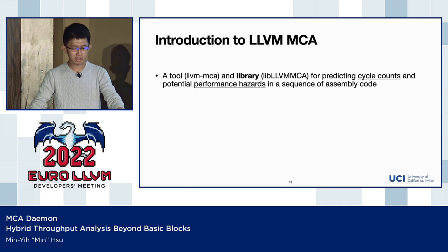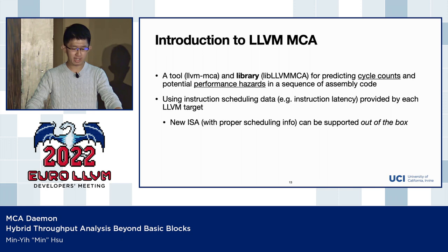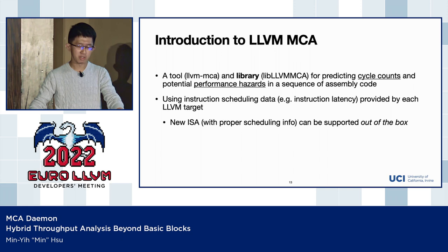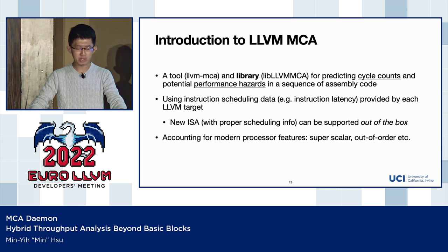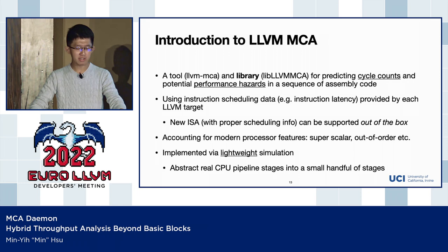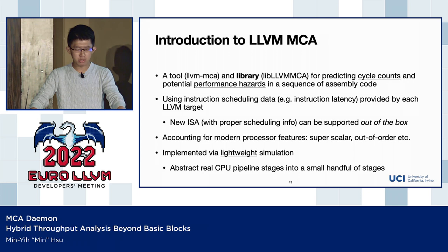What is LLVM-MCA? It's a tool — and like the rest of the LLVM project, also a library — for predicting cycle counts and potential performance hazards in a sequence of assembly code. It uses instruction scheduling data, like instruction latency, provided by each LLVM target. This means new ISAs with proper scheduling info can be supported by this tool out of the box. It also accounts for modern processor features like superscalar and out-of-order execution, implemented via lightweight simulation.